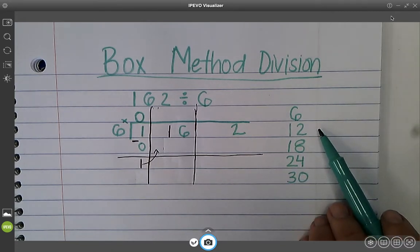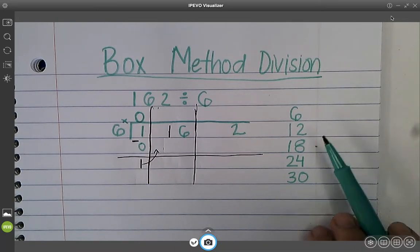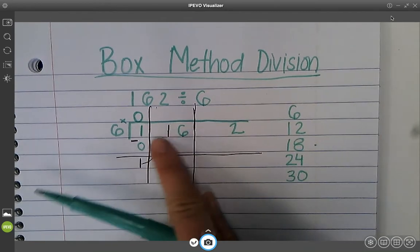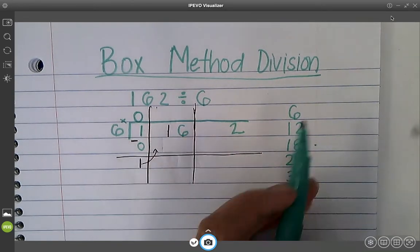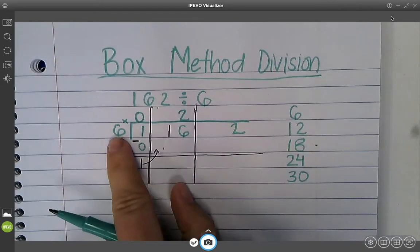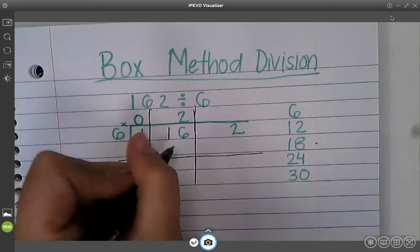Now we have to get as close as we can to 16 without going over. Well, it's 12. It's not 18. Although 18 is close to 16, it's actually a little closer. It is bigger than this number. So we can only subtract by a smaller number. So we're going to put a 2 up there because 6 times 2 is 12.